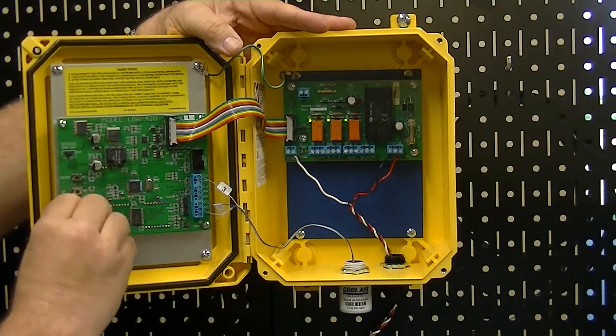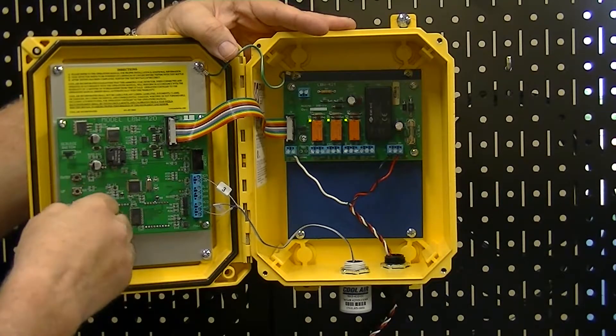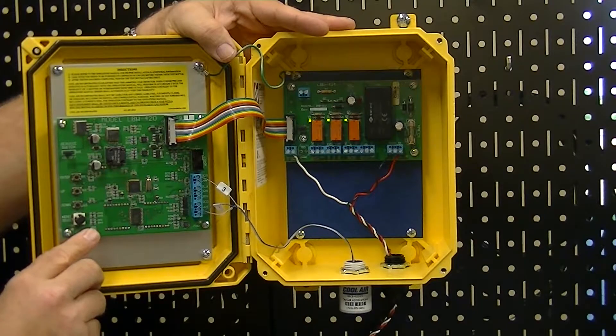To calibrate the detector we're going to set the switch position to position nine. The set one jumper still must be on.